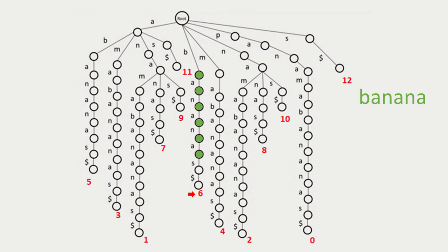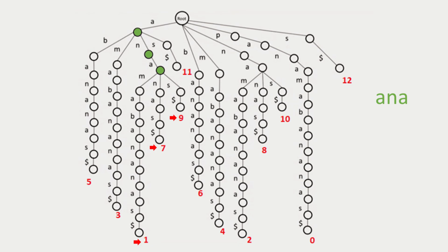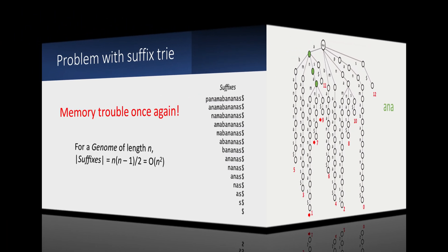For example, for 'panamabananas,' the entire string is a suffix starting at position zero, and we label its leaf accordingly. Each path through the tree corresponding to a suffix is labeled with the appropriate starting position. Once we find a match, we walk down to the leaf to find the position. For 'banana,' we find it is a match and the starting position is six. For 'anna,' which occurs in three different places, we are at a branching node, so we walk down each of the three paths to leaves, finding starting positions one, seven, and nine.